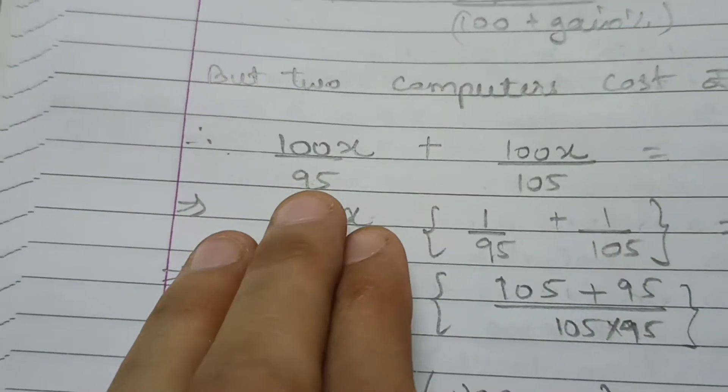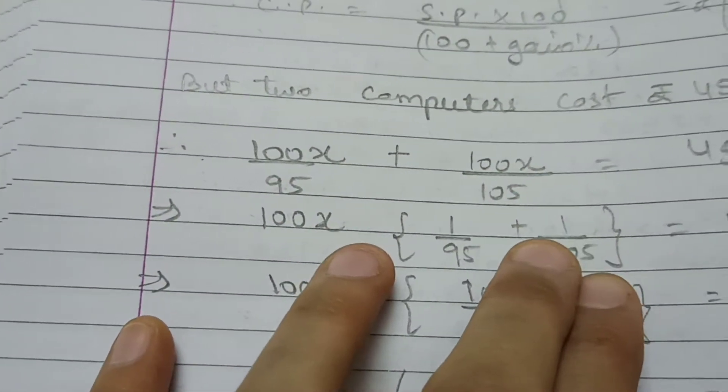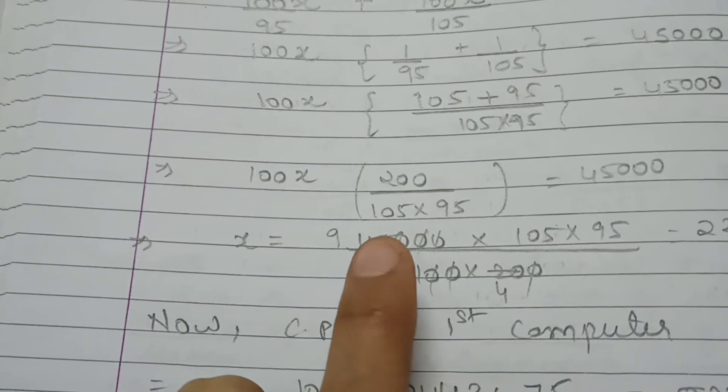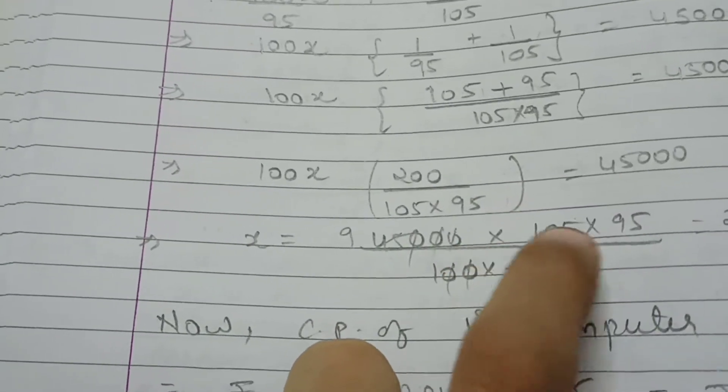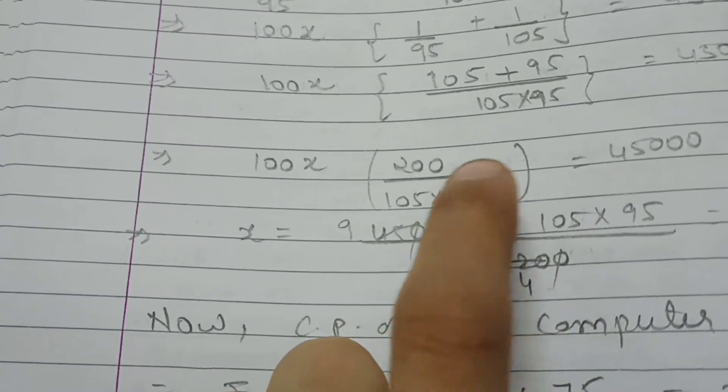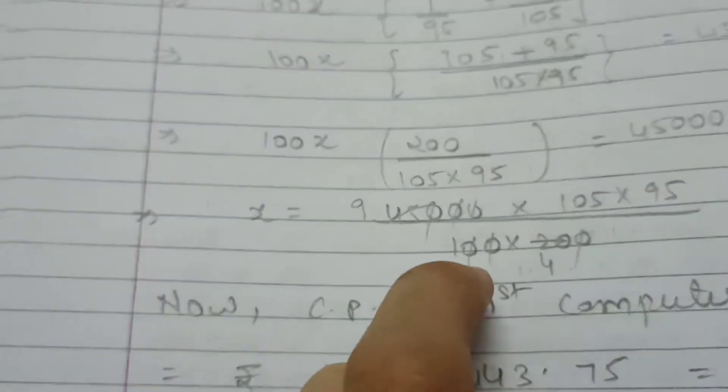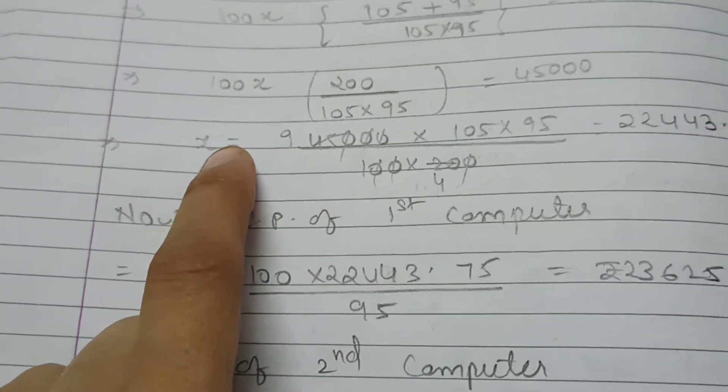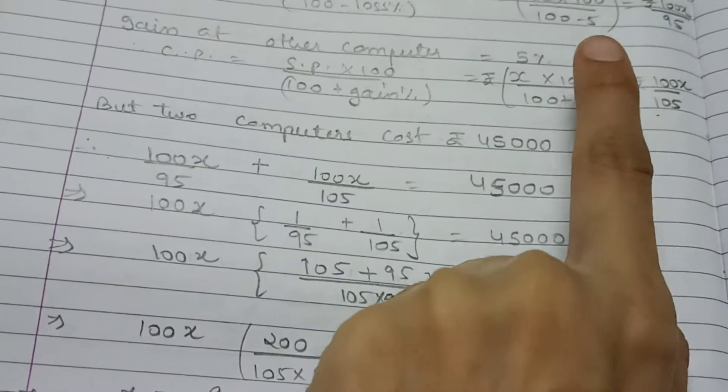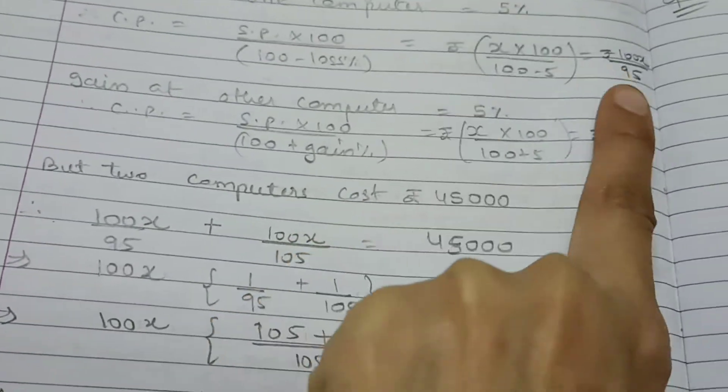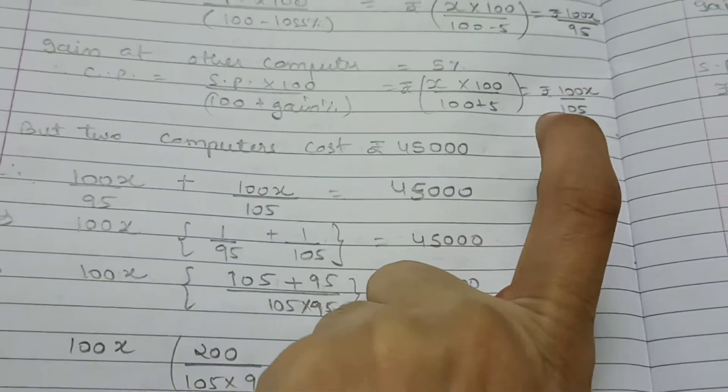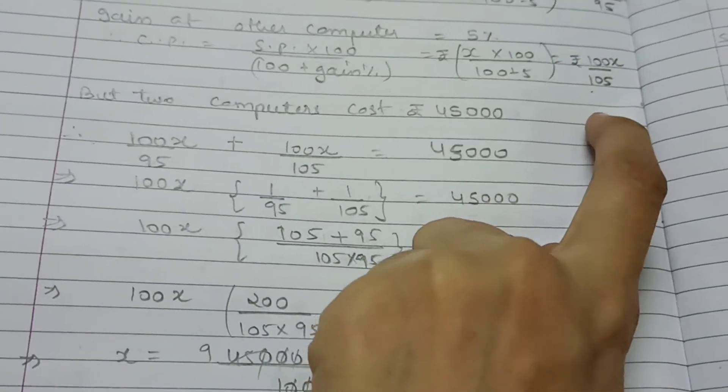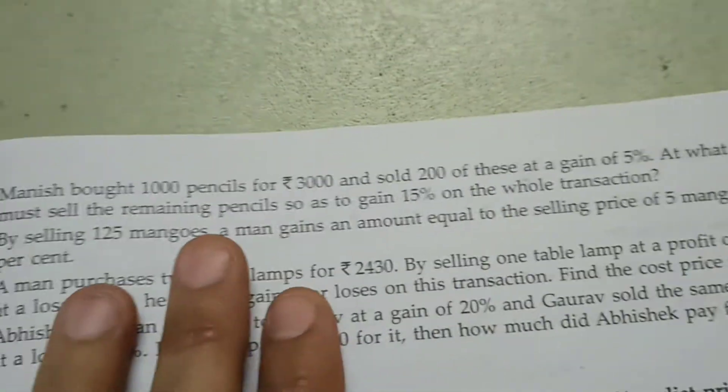We will get two values in terms of X: 100X by 95 plus 100X by 105 equals 45000. By solving this, we get value of X. X equals 45,000 multiplied by this denominator. Then, first computer's cost price is 100X upon 95, and second is 100X by 105. We will apply the value of X in these two.